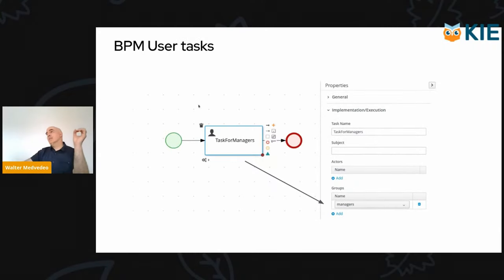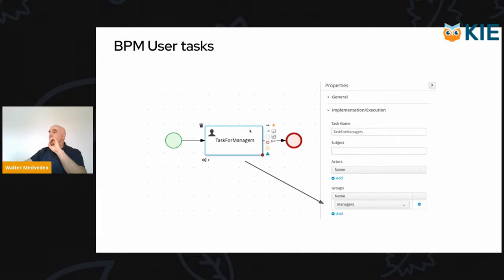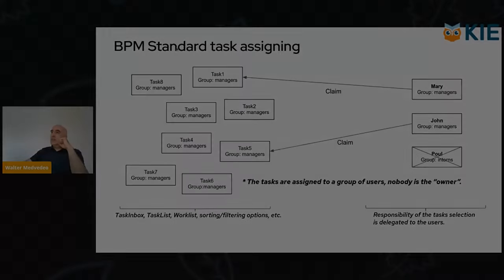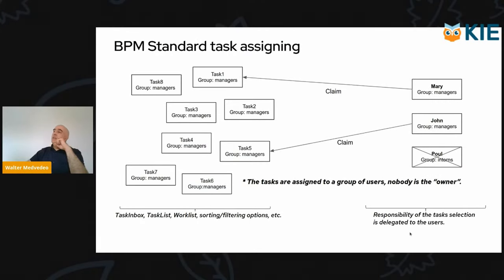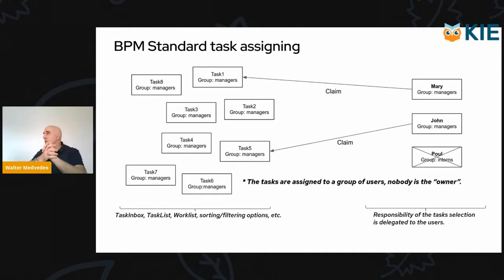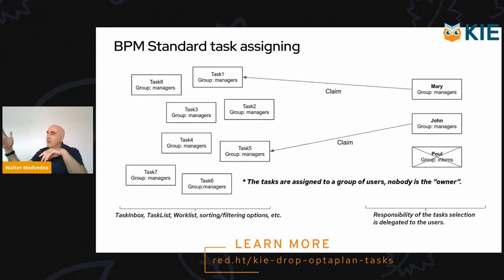Normally when we have business processes and we work with user tasks, a piece of the task configuration indicates which group of users we expect to work on this task. In the standard way of working, the responsibility of task selection is delegated to the users, who need to go through a completely manual procedure. This is not an issue — that's the way we work in standard business process management, and all implementers work this way.